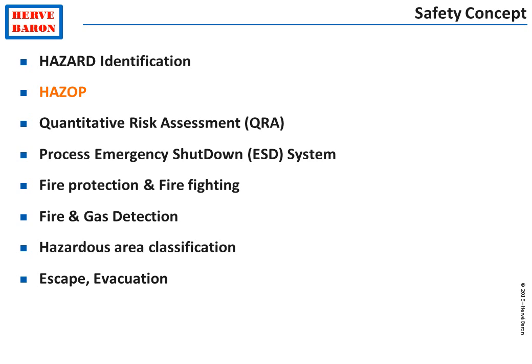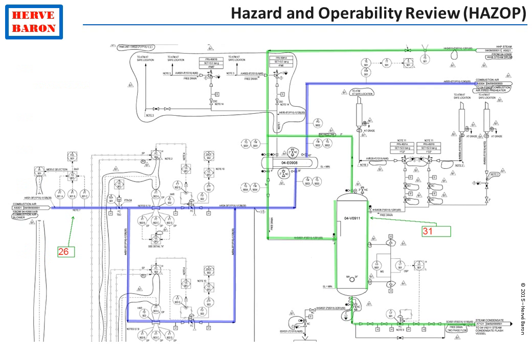The HAZOP, which we have already mentioned in relation to P&IDs, is a systematic review of the potential deviation of process parameters beyond their normal values. Is there a possibility, for instance, in the process line, for the pressure to deviate beyond its normal operating range? Such a possibility may be the failure of process controllers, failure of equipment, or operator error. If there is such a possibility, then the HAZOP will review whether there is a safeguard against this too-high pressure.